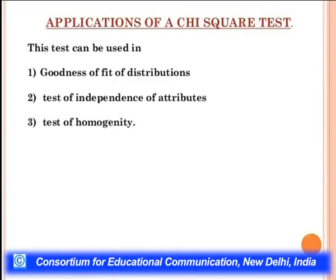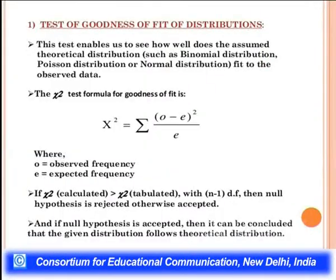The three important applications of a chi-square test are: goodness of fit, test of independence of attributes, and test of homogeneity. These are the main applications — we must calculate and understand goodness of fit distributions, test the independence of attributes, and test the homogeneity of variables.